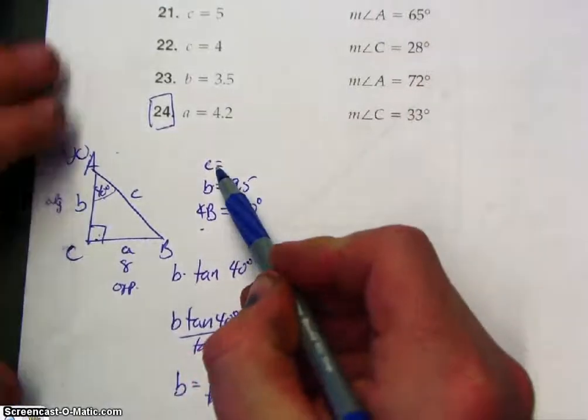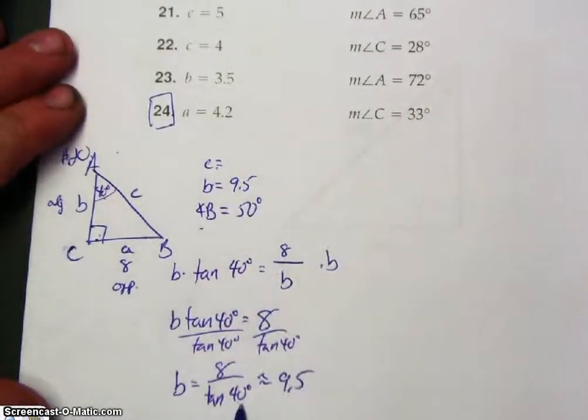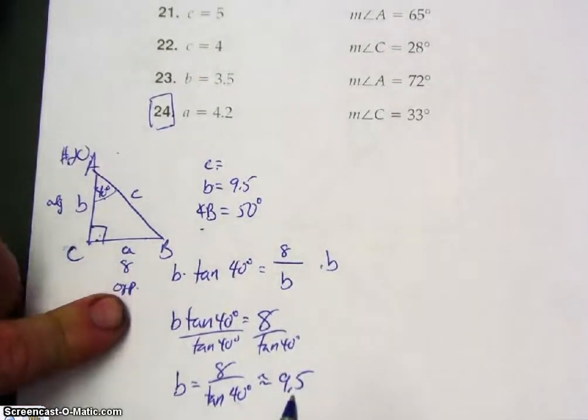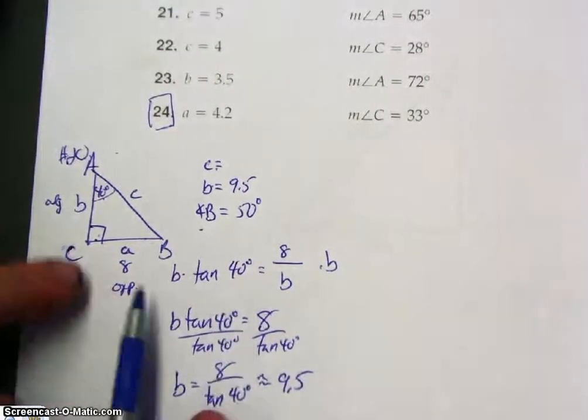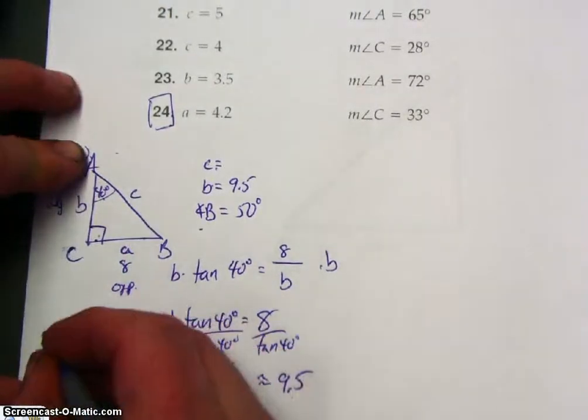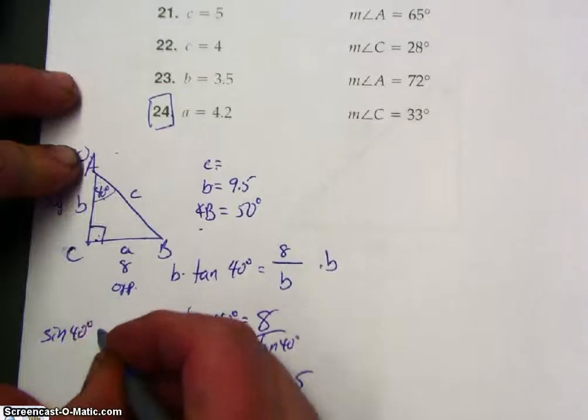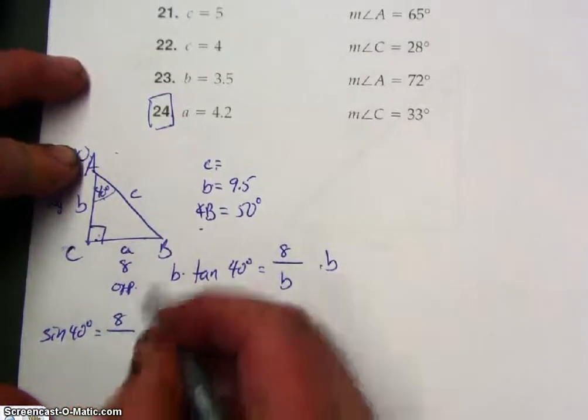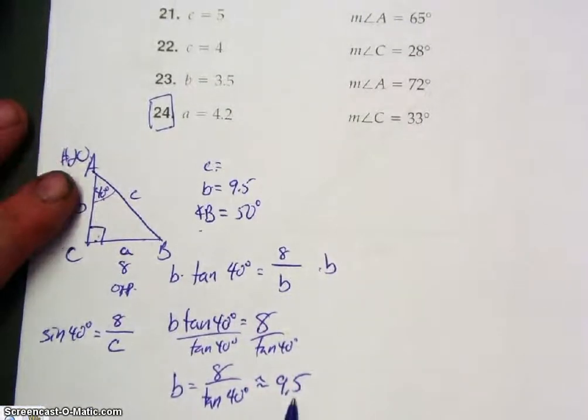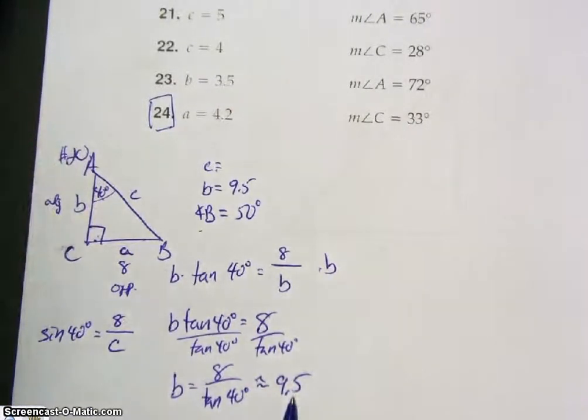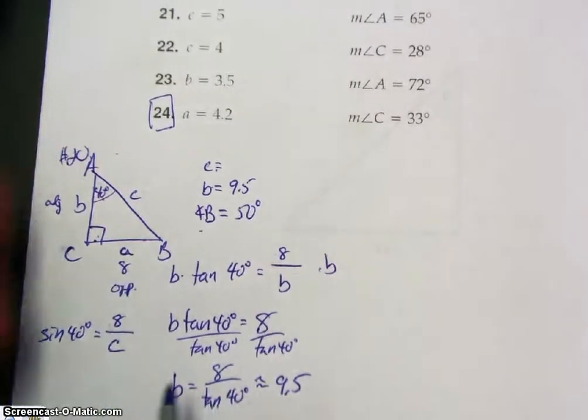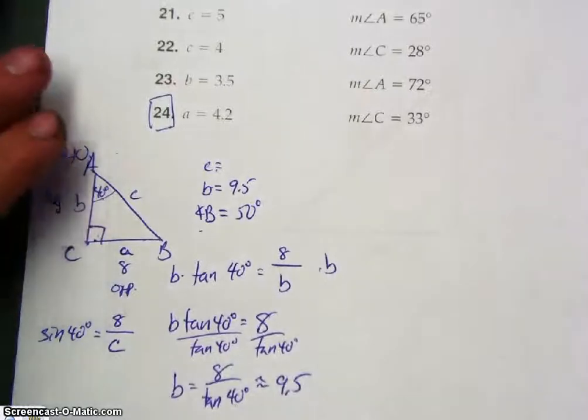So 9.5. Now to find side C, I do not want to use this because it's already—I want to use the opposite. So if I want to find opposite over hypotenuse, that means it's going to be sine, sine of 40 degrees equals opposite over hypotenuse. I don't want to do it the other way because I'm using the approximation of 9.5. If I use the other trig function, I don't want that. I want to use 8 for both of these, so it sort of forces my hand on what trig function I can use.